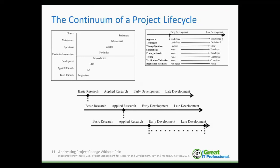If you look at the top-right box, this model focuses on additional considerations to help determine how early or late in the research and development process the project falls. The model looks at approach, techniques, theory, simulations, prototyping, testing, etc., and gives you a continuum from early development to late development. For example, early development might have a very undefined approach, while late development would have an established approach. Similarly, early development may have an unclear theory, but by late development you should have a clear direction — what we're going to call a trajectory.